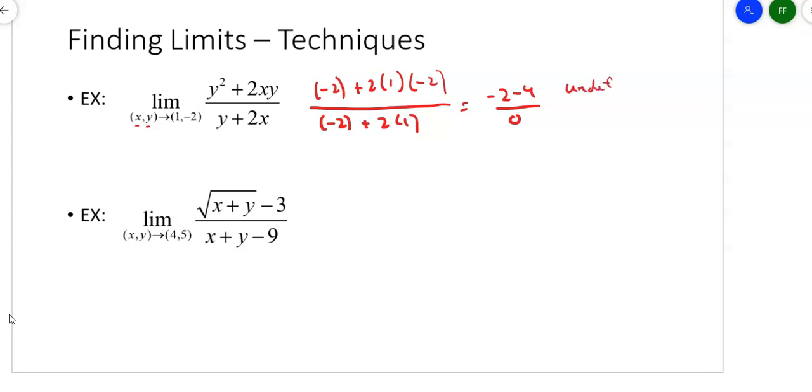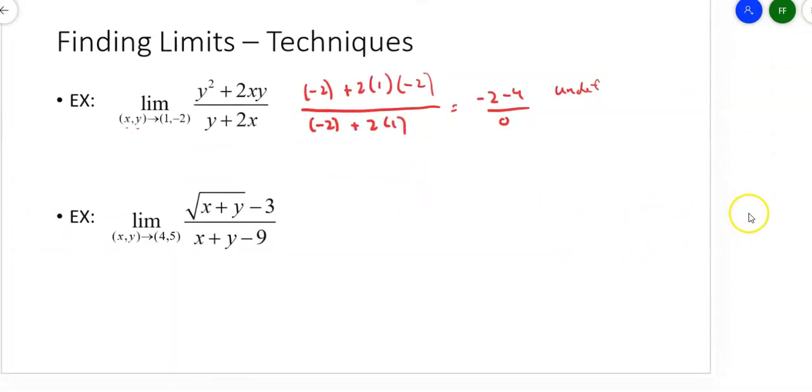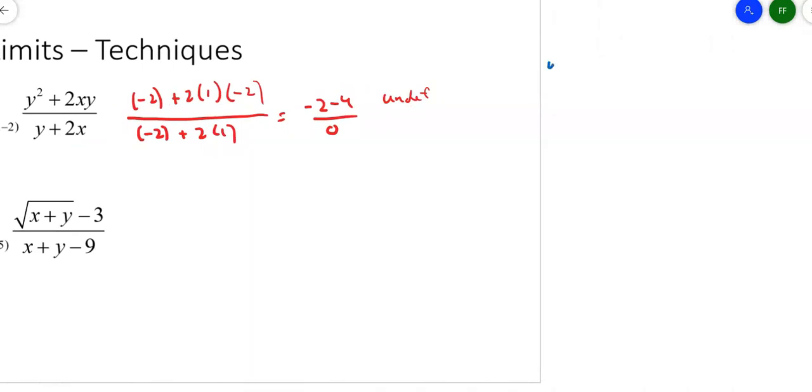So what can we do to help us out here? One thing we can do is notice that on the top, both terms have a y, so let's factor out a y. We end up with y times (y plus 2x) on the top and (y plus 2x) on the bottom. Look at that—top and bottom go away, giving us y. Now take the limit again as y approaches negative 2, and we just get negative 2. Not bad.